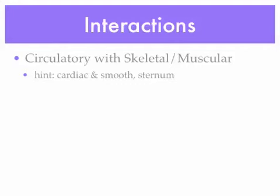Smooth muscles are found on the inside of your blood vessels — inside your veins, arteries, and capillaries — and they help move blood throughout the bloodstream. Another way the circulatory system interacts with the skeletal and muscular systems is through protection. The skeletal system protects many other body systems. Your sternum — that large bone in your chest where your ribs come together in front — protects your heart, making it a very important part of the circulatory system.